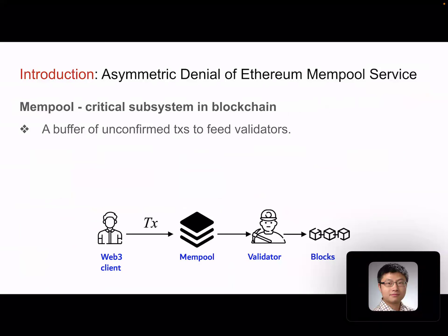To begin with, let me introduce the concept of memory pool. Memory pool is a critical subsystem in blockchain such as Ethereum and Bitcoin. Its main job is to buffer unconfirmed transactions before block validation, so that validators will be able to select those transactions from the memory pool to build the next block.